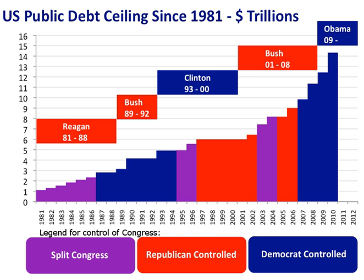Prior to 1917, the United States did not have a debt ceiling, with Congress either authorizing specific loans or allowing Treasury to issue certain debt instruments and individual debt issues for specific purposes. Sometimes Congress gave Treasury discretion over what type of debt instrument would be issued. Between 1788 and 1917, Congress would authorize each bond issue by the United States Treasury by passing a legislative act that approved the issue and the amount.